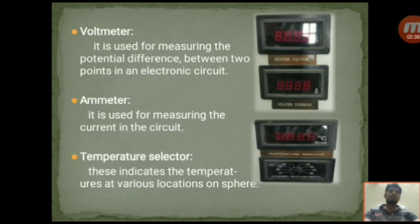Voltmeter. It is used for measuring the potential difference between two points in an electronic circuit. Ammeter. It is used for measuring the current in the circuit. These both voltmeter and ammeter readings will be used for calculating the power that is supplied to the oil in the sphere.